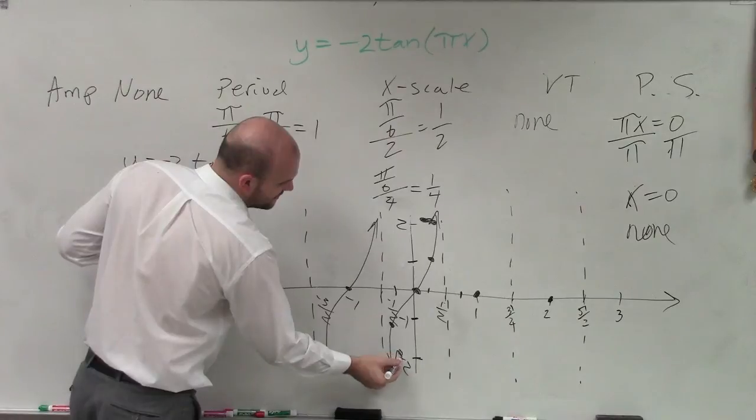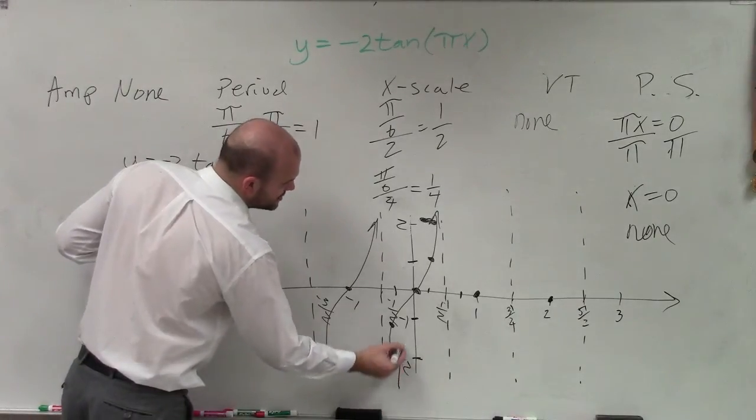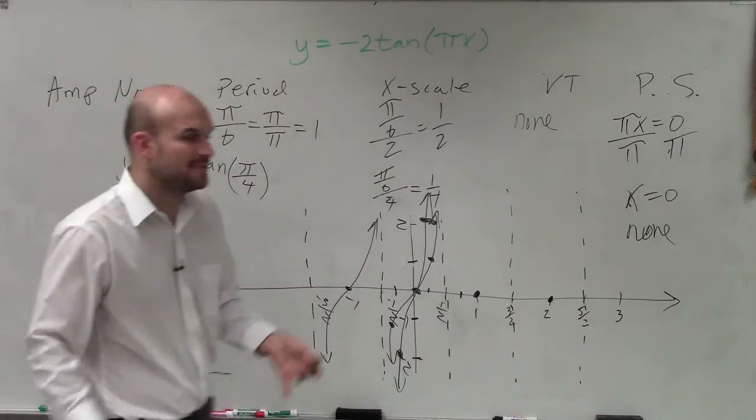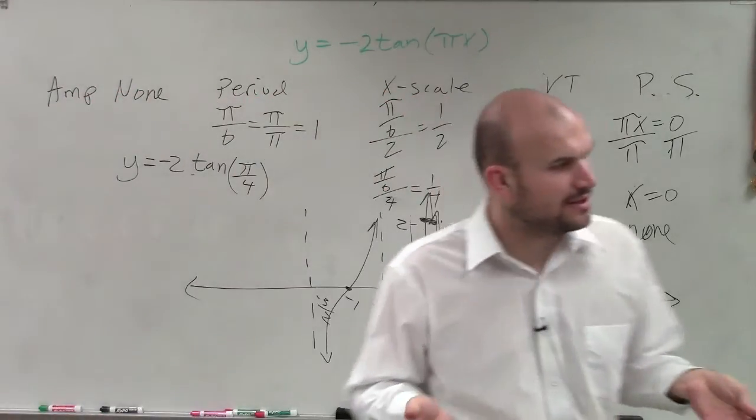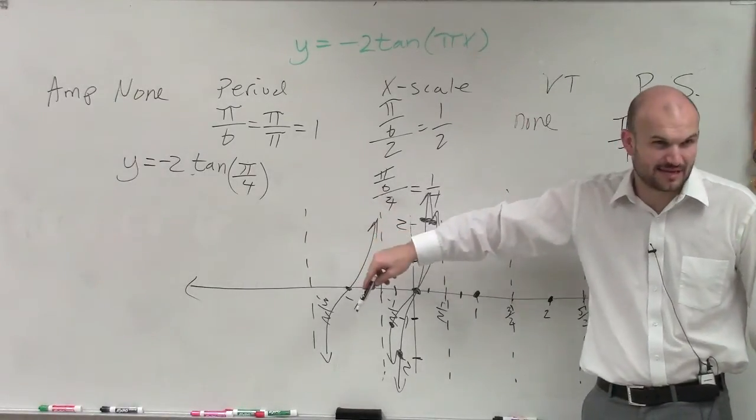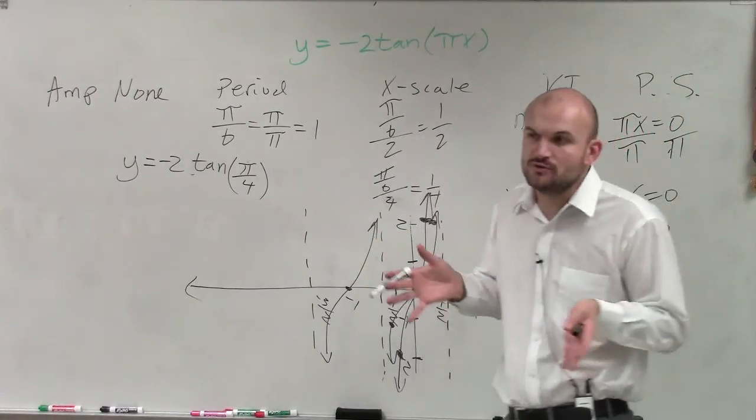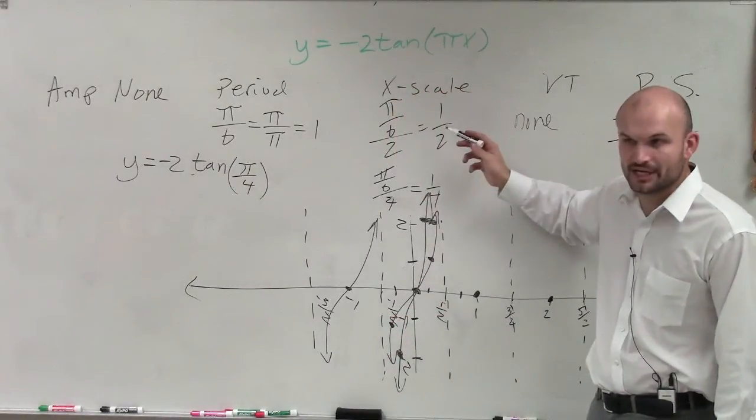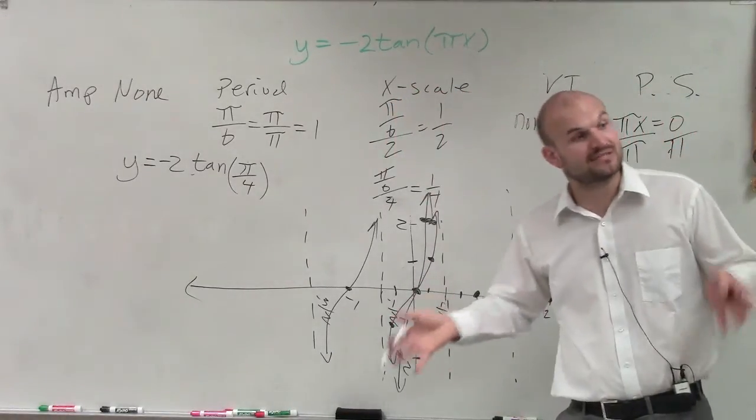So the graph is actually going to be much skinnier. So what happens is the absolute value of that 2, it doesn't really change so much as far as where the asymptote is or where the x-intercept is. But since that value, the absolute value is greater than 1, that's going to make your graph much skinnier.